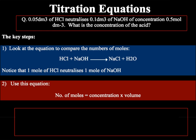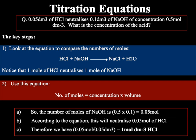Here is another question: 0.05 dm³ of HCl neutralises 0.1 dm³ of NaOH of concentration 0.5 mol/dm³. What is the concentration of the acid? First, moles of NaOH = 0.5 × 0.1 = 0.05 moles. From the equation, HCl and NaOH react in a 1 to 1 ratio, so moles of HCl = 0.05. Concentration of HCl = 0.05 ÷ 0.05 = 1 mol/dm³.